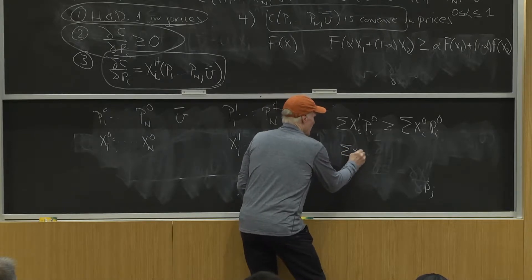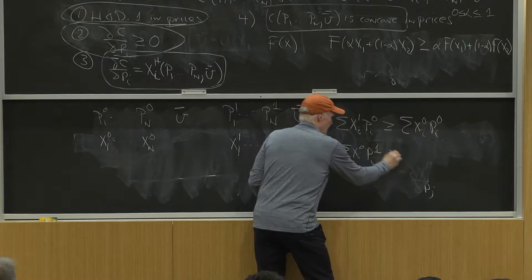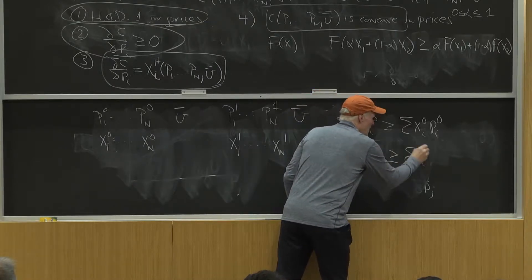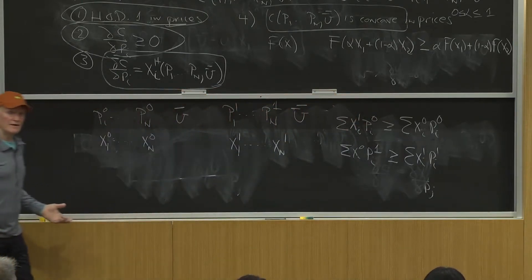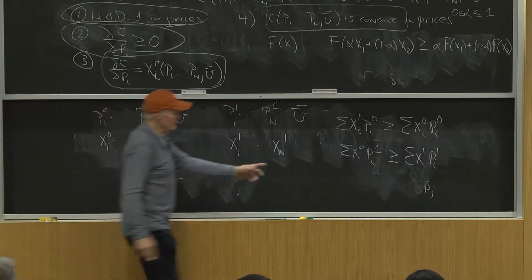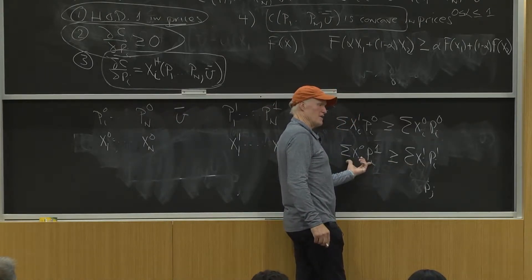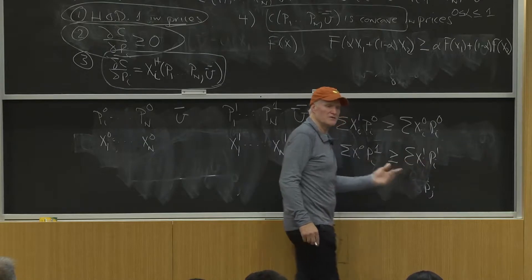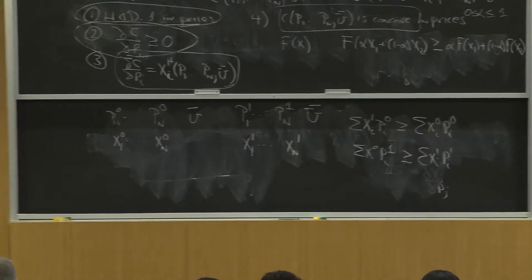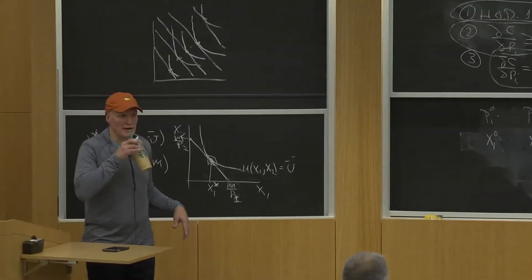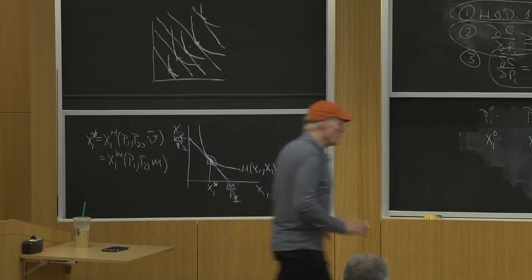Similarly, the sum of xi^0 pi^1 has to be bigger than or equal to the sum of xi^1 pi^1, for the same logic. At these prices, this bundle, which is not the cost minimizing bundle, has to cost at least as much as the cost minimizing bundle. So now I got those two inequalities.